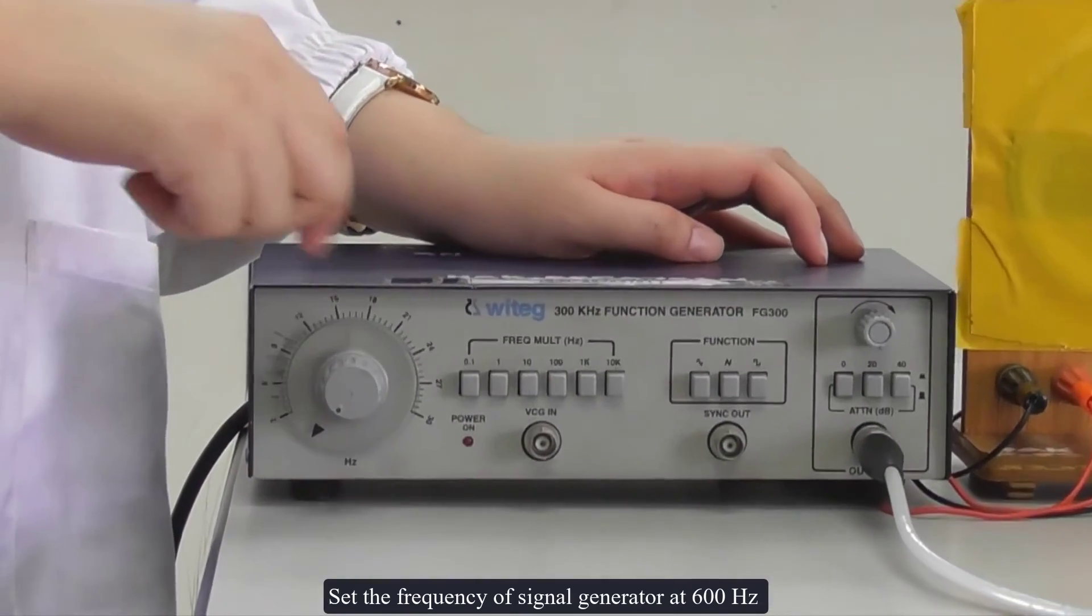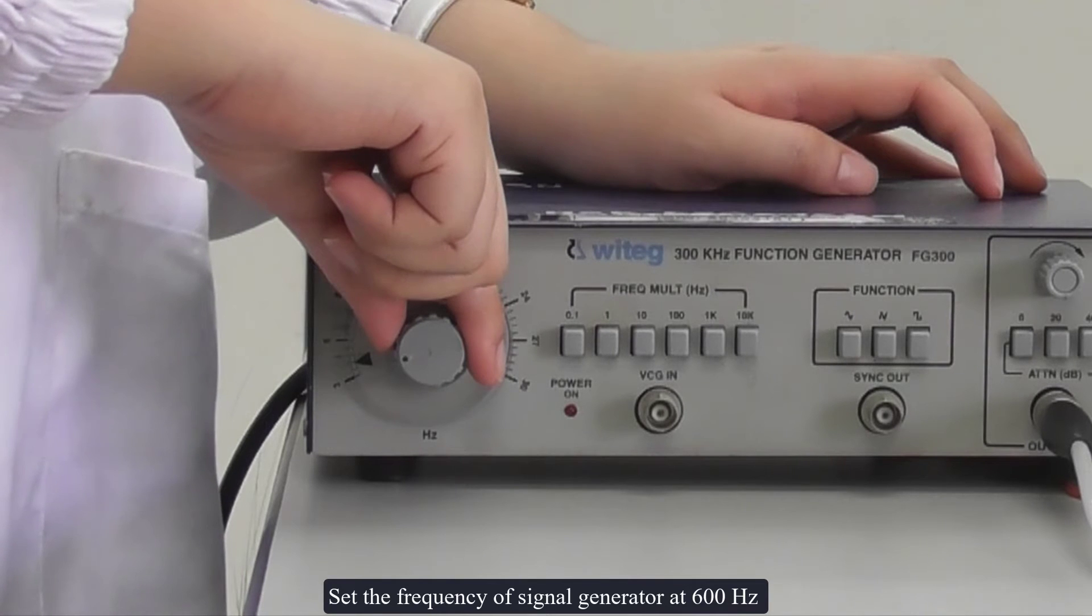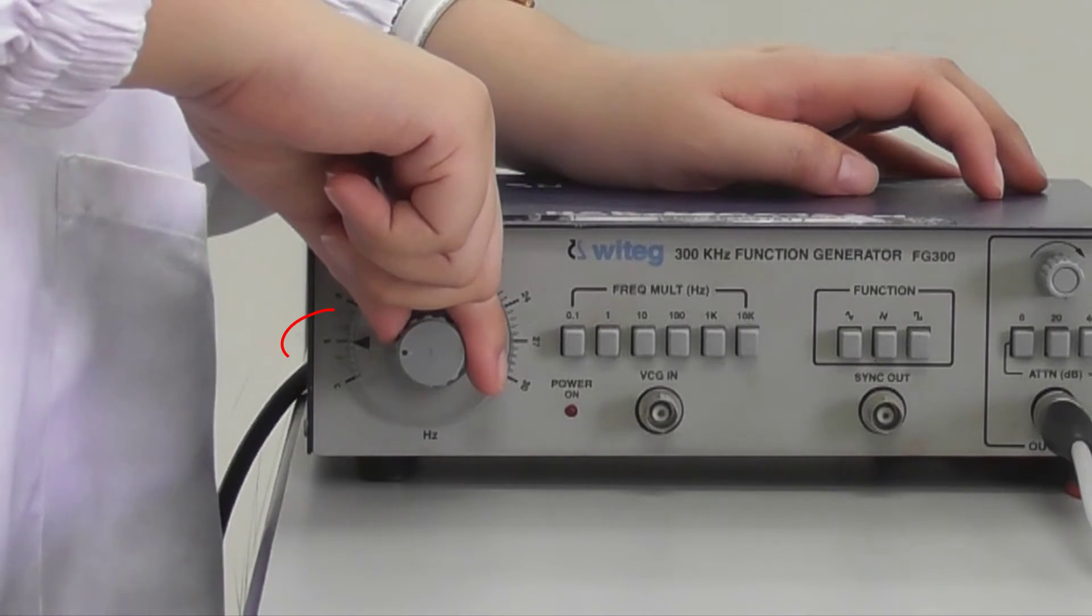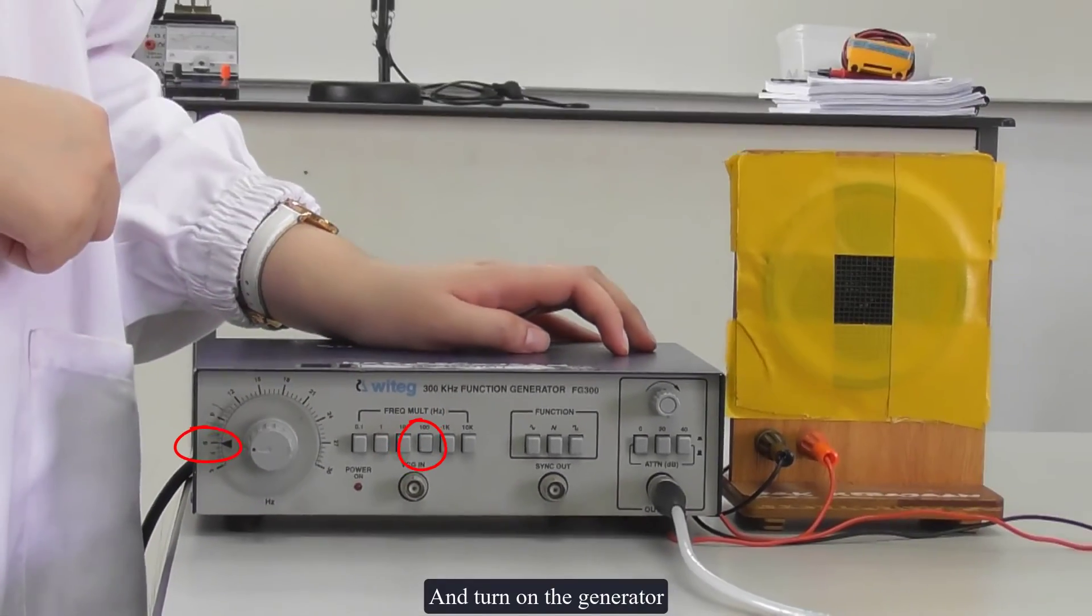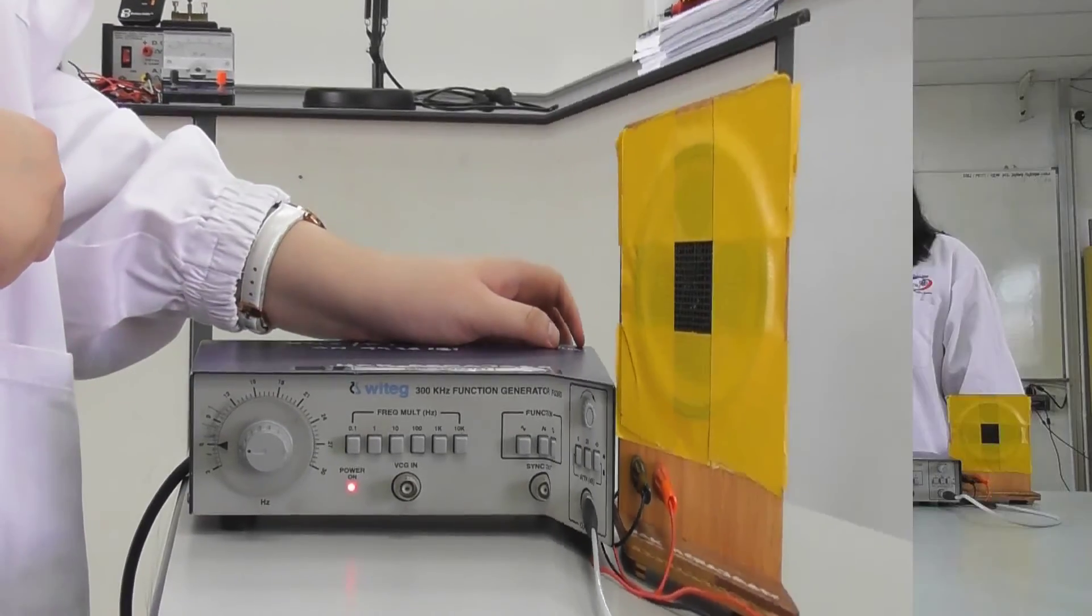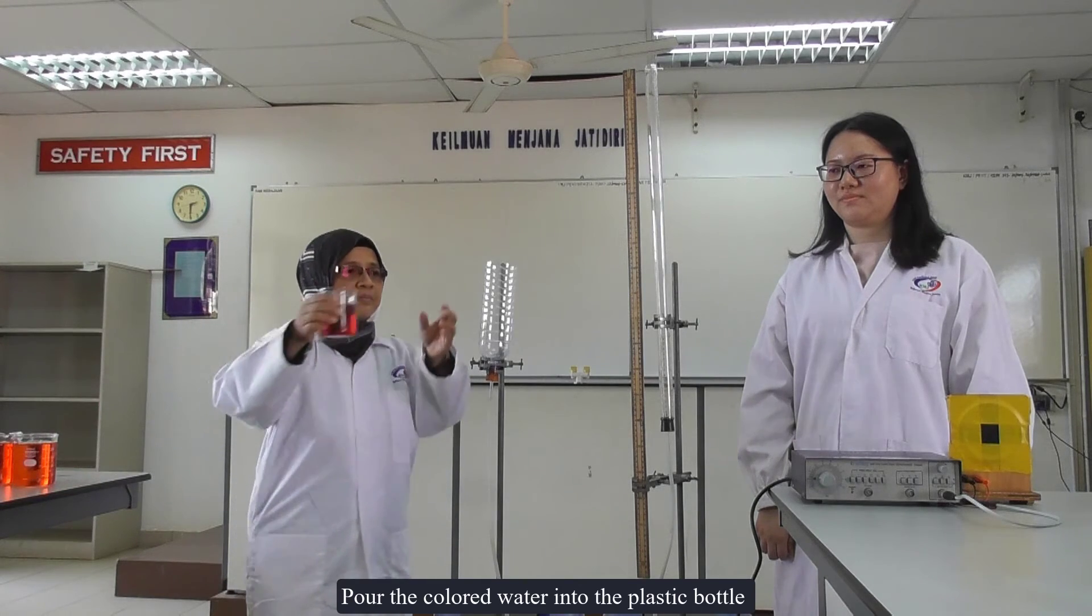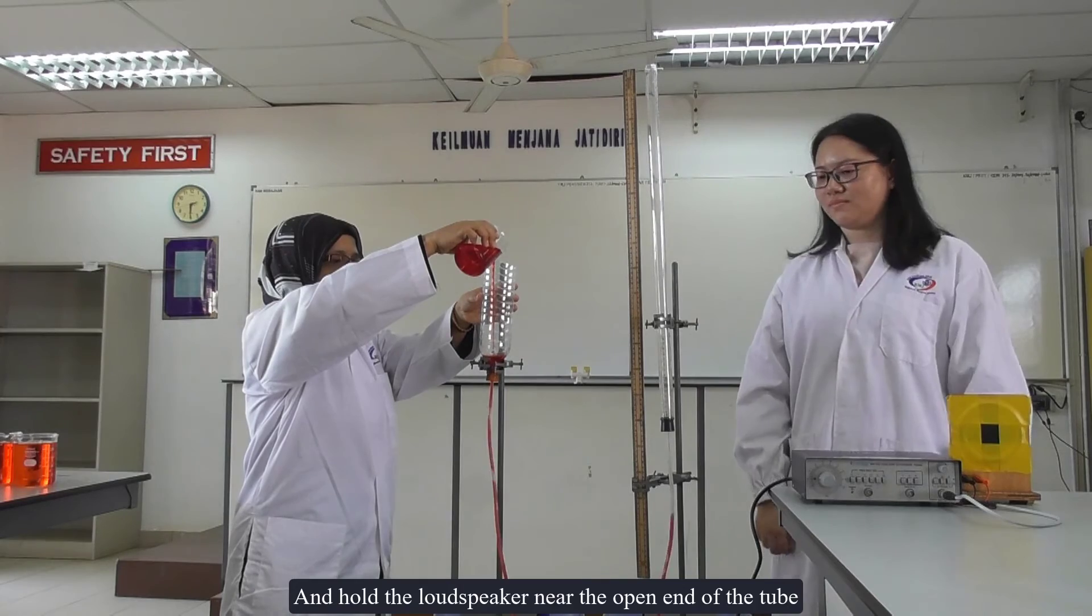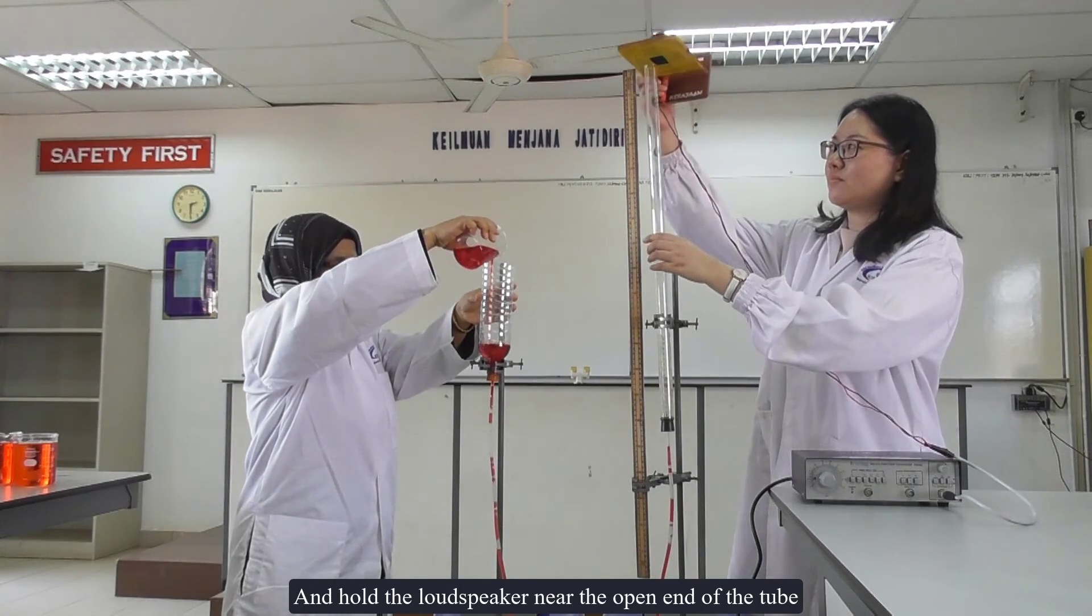Set the frequency of signal generator at 600 hertz and turn on the generator. Pour the colored water into the plastic bottle and hold the loudspeaker near the open end of the tube.